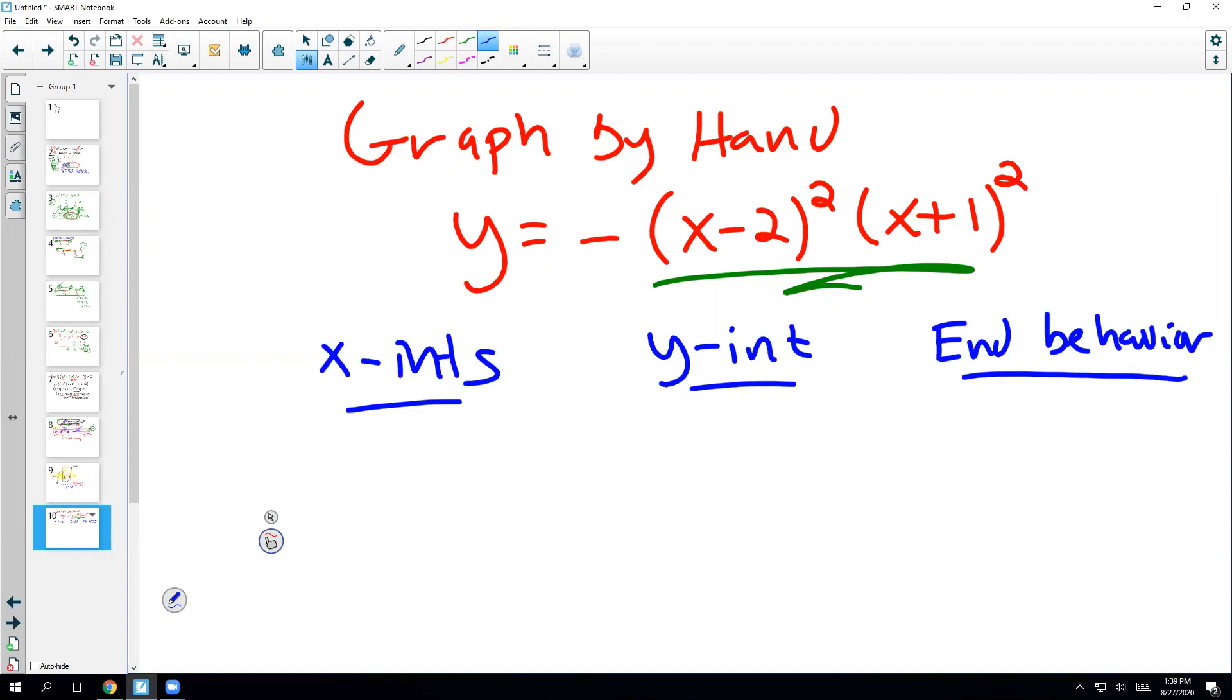Okay, so what are the x-intercepts? Well, when it's already factored, you can just read these right off. This factor, x minus 2, corresponds to x equals 2 as an x-intercept. And x plus 1 corresponds to x equals negative 1 as an x-intercept.